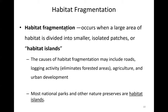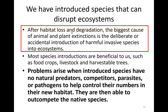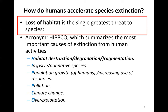Most national parks and other nature preserves are habitat islands. After habitat loss and degradation, the biggest cause of animal and plant extinctions is the deliberate or accidental introduction of harmful invasive species into ecosystems. That is the second item in the HIPPCO acronym — invasive non-native species.